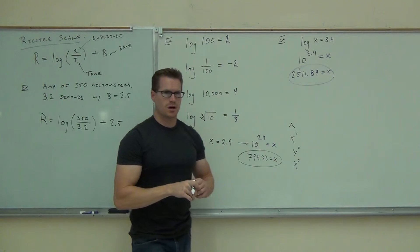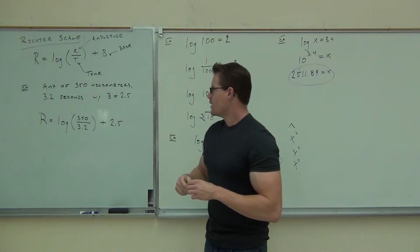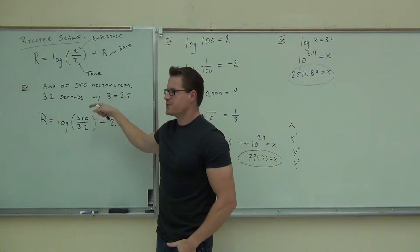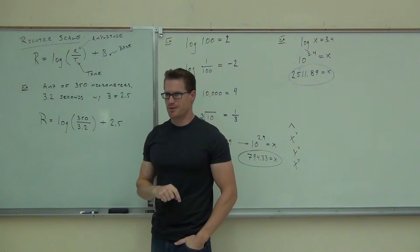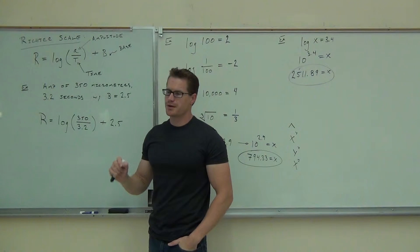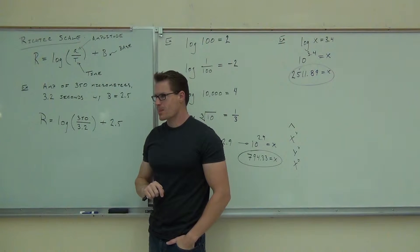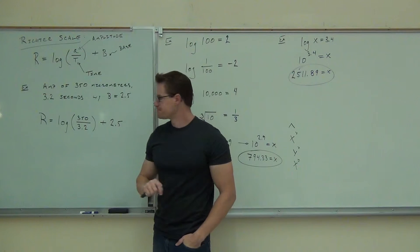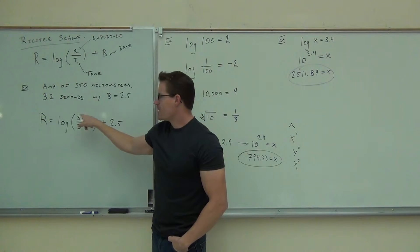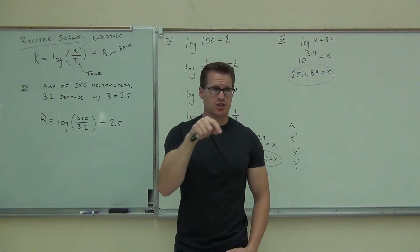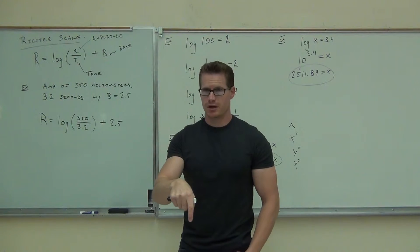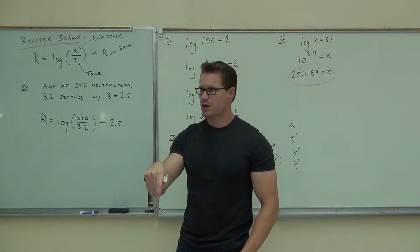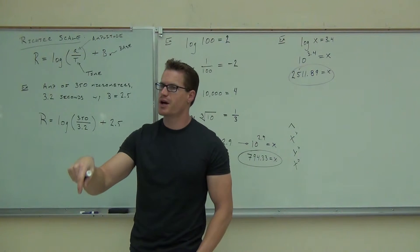Here's how you calculate this logarithm. On your calculators, you should do 350 divided by 3.2 and press enter. Don't round that number. Now, take the logarithm of what you just got. Some of you, if you had to press your numbers first, just press log right now. It'll give it to you. Others of you, if you press log right now, you're going to have to use the answer button on your calculator.